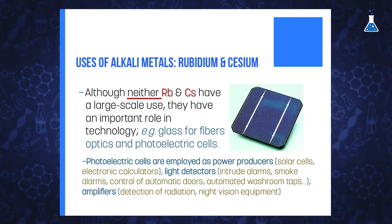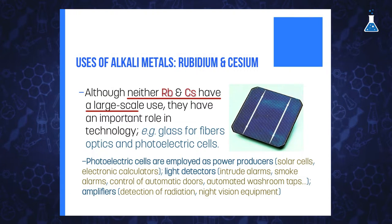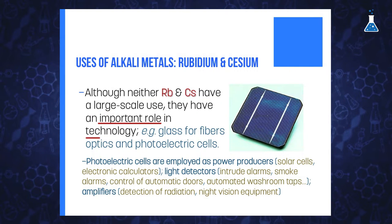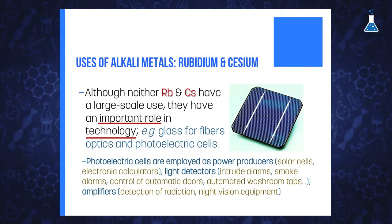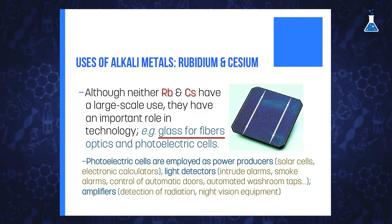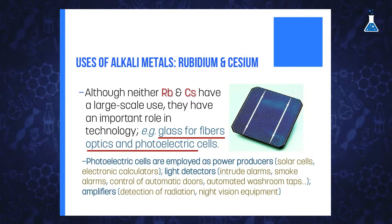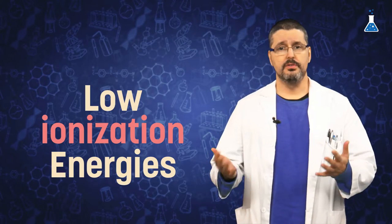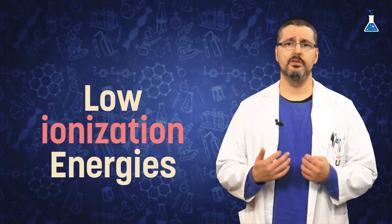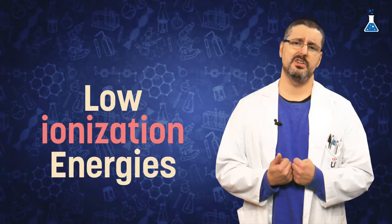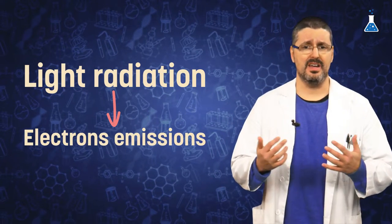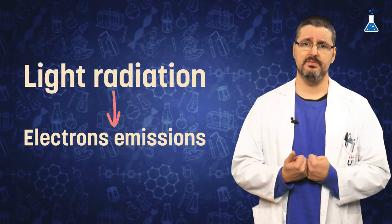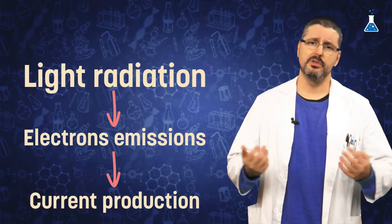Applications of rubidium and cesium are highly specialized. Neither of them has a large-scale use, although they have an important role in today's technology. Some of their uses include glass for fiber optics and photoelectric cells. Their use in photoelectric cells is justified due to their low ionization energies — when they are irradiated with light they emit electrons, and therefore produce a current.